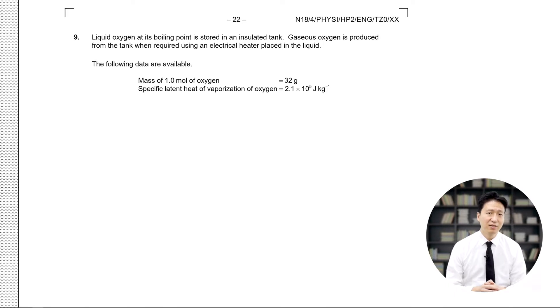The problem reads: Liquid oxygen at its boiling point is stored in an insulated tank. Gaseous oxygen is produced from the tank when required using an electric heater placed in the liquid. The following data are available: the mass of 1 mol of oxygen, the specific latent heat of vaporization of oxygen.